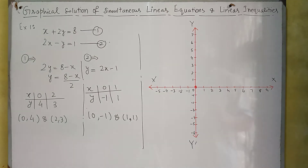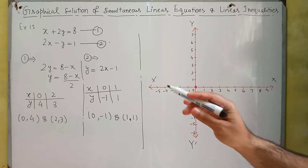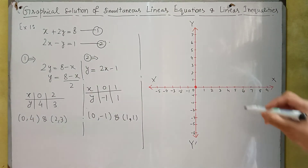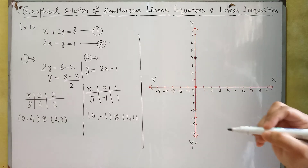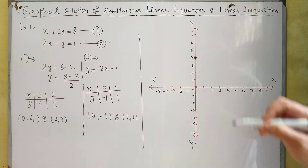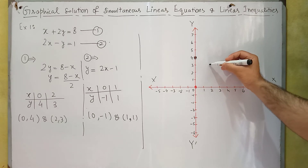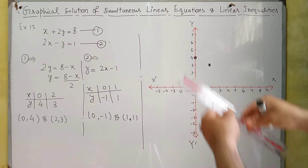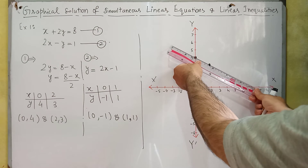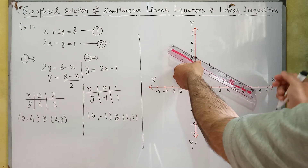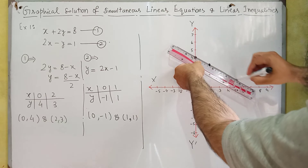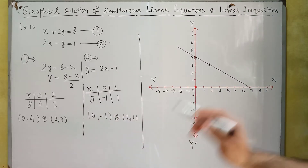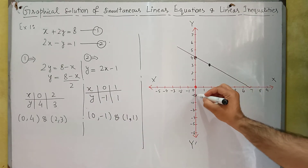Now we are going to plot these coordinates. For equation 1, the first coordinate is X = 0 and Y = 4, and the second coordinate is X = 2 and Y = 3. We will join these two coordinates to get the line. Similarly, for equation 2, we plot X = 0 and Y = −1, and then X = 1 and Y = 1, and join them to get the second straight line.